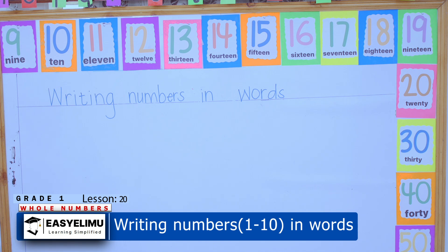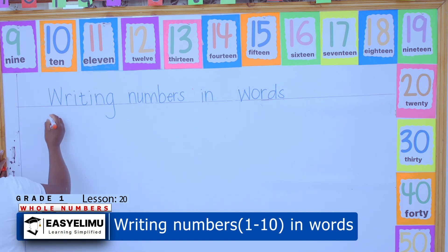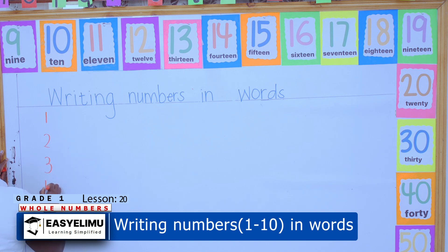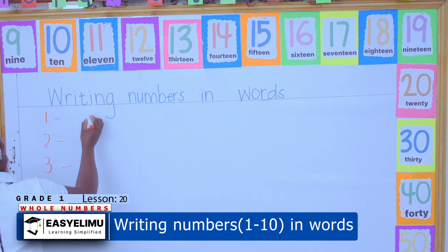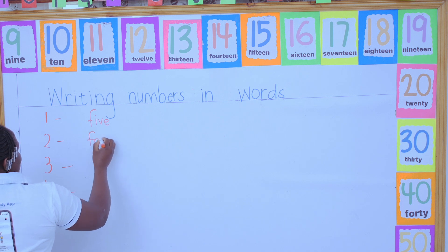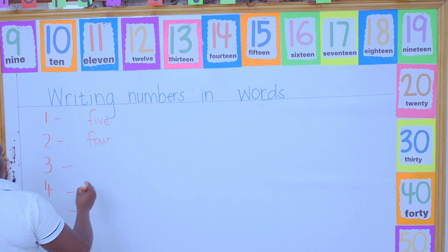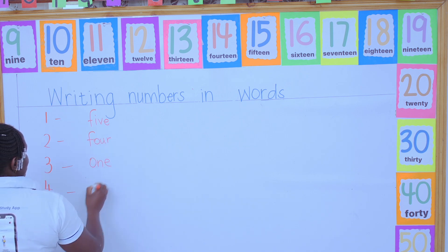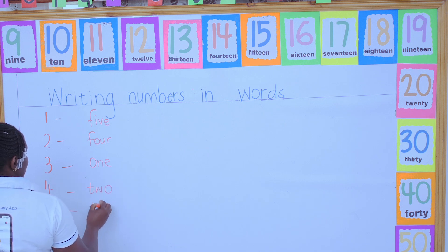Yesterday we did numbers in words. Do you remember? We were writing number names, and someone came to write the number names for numbers one, two, three, four, and five. You were supposed to come and match the number name to the word, and the number name to the symbol. That is exactly what we did, and most of you were able to match them.